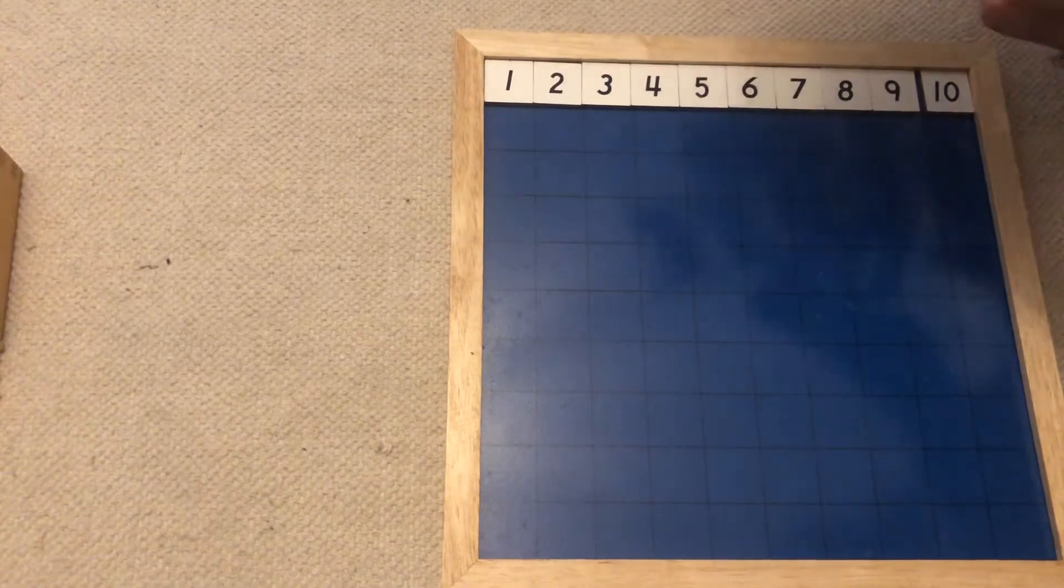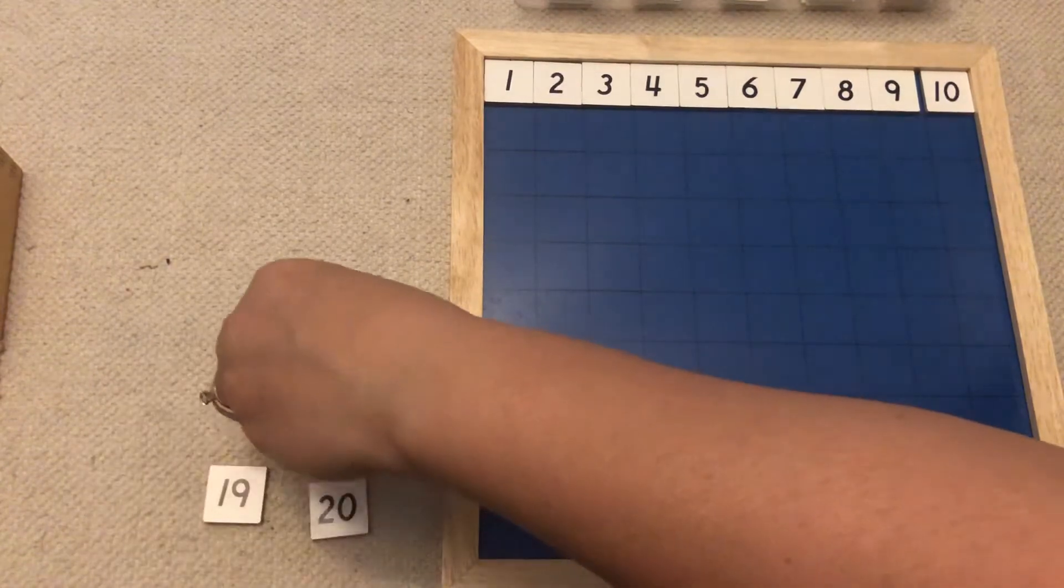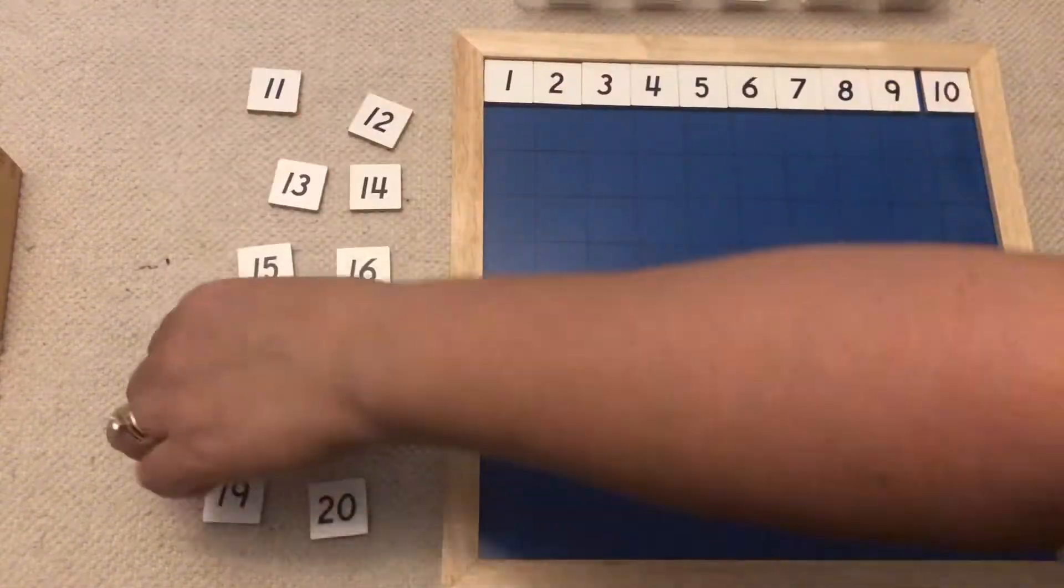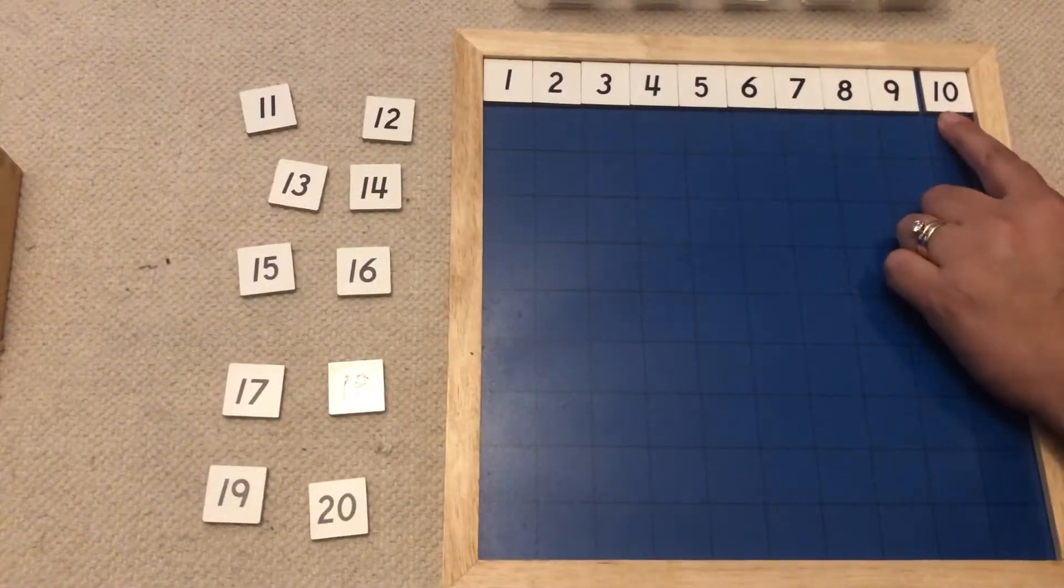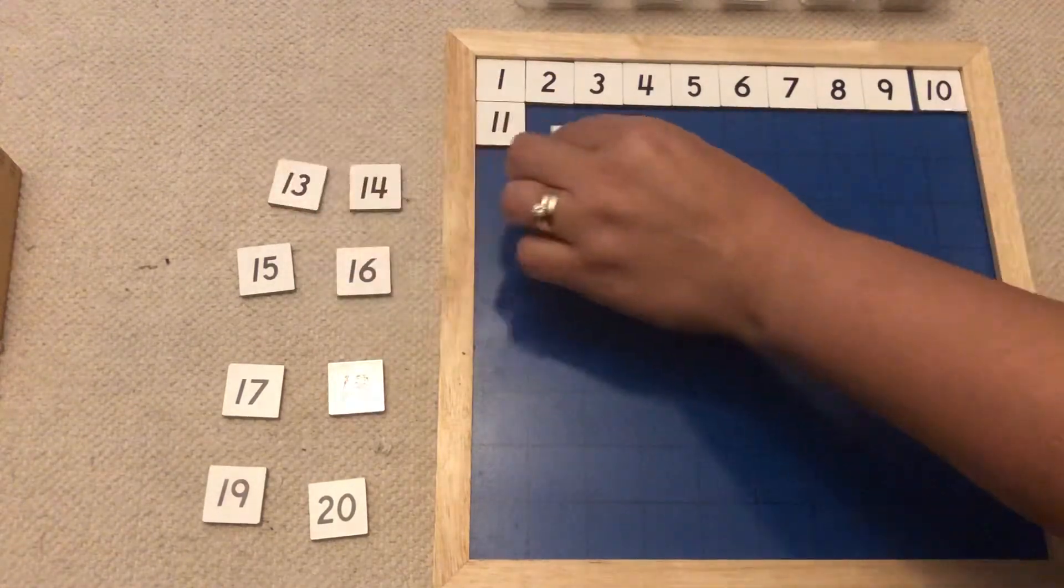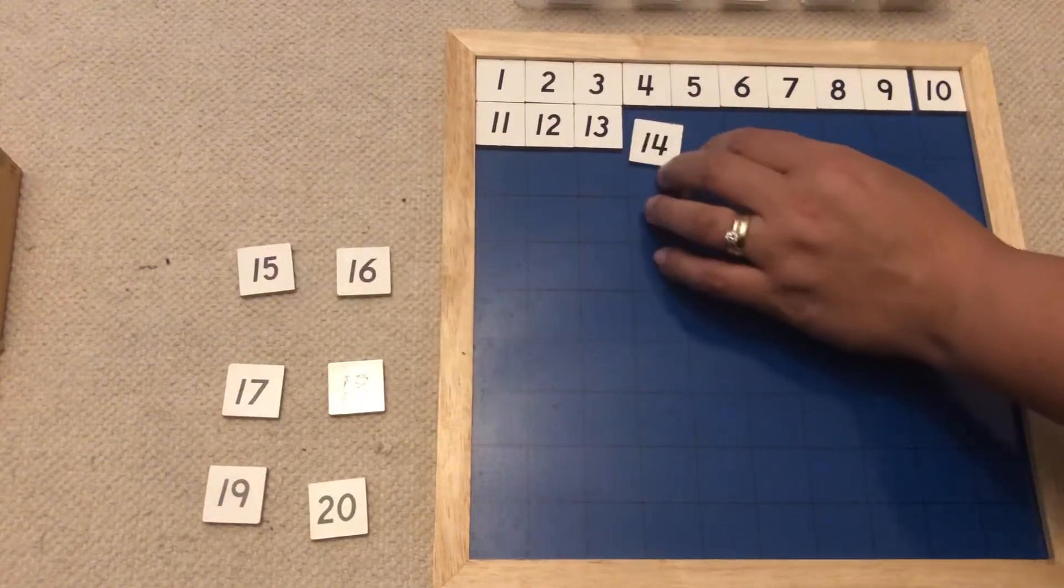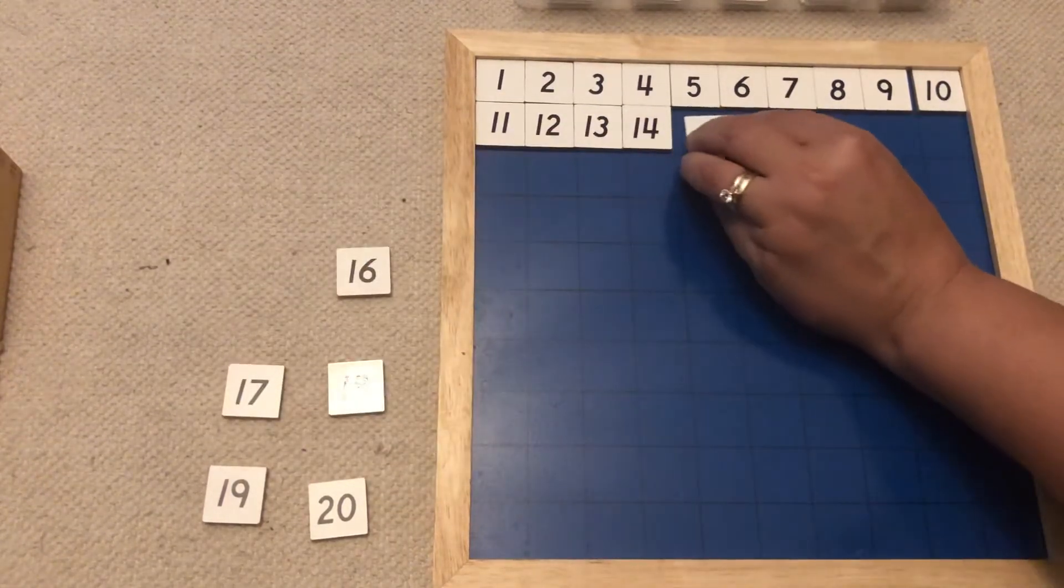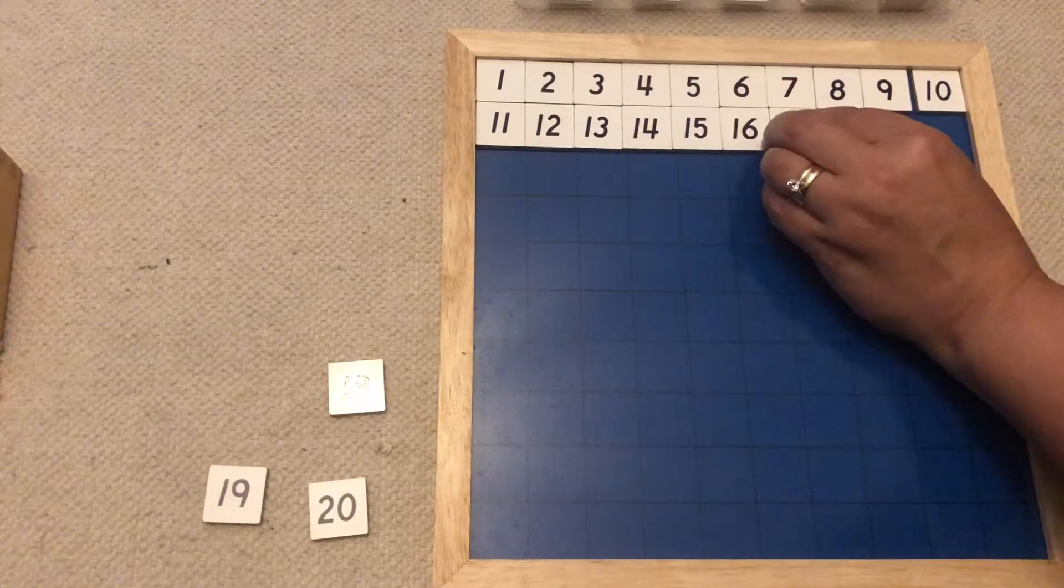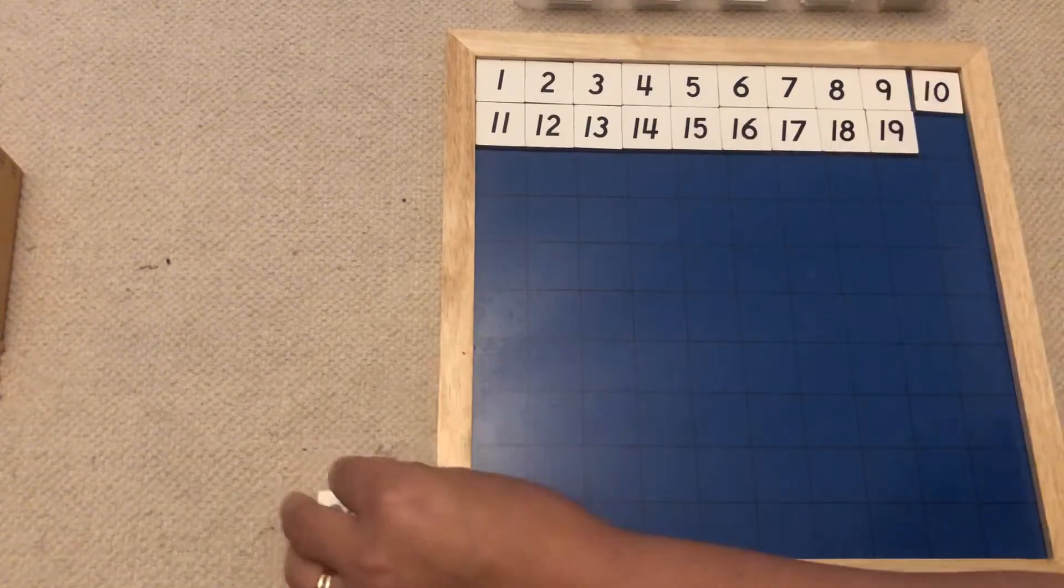Next row. So the last number I had was ten. So I'm up to 11, 12, 13, 14, 15, 16, 17, 18, 19, 20.